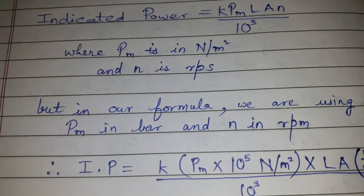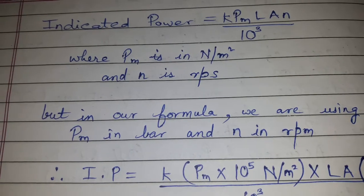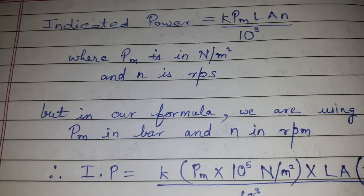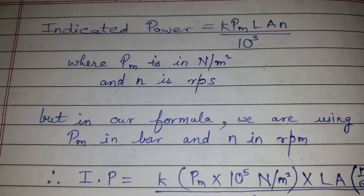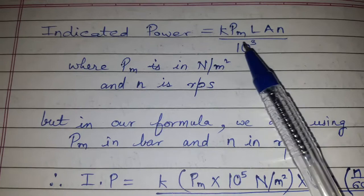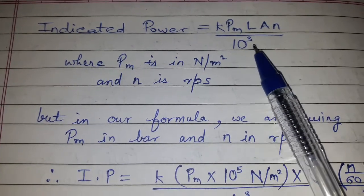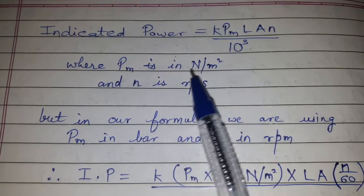Hi friends, today's topic of discussion is the confusion regarding the formula of indicated power. The actual formula for indicated power is k Pm L A n divided by 10³, where Pm is in N/m² and n is in rps.